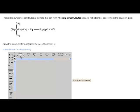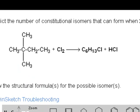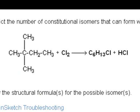Here's another problem. Predict the number of constitutional isomers that can form when 2,2-dimethylbutane reacts with chlorine according to the given equation. So we understand the fundamental idea of the reaction that a hydrogen is going to be substituted with a chlorine. But let's see what different hydrogens we have here on this compound.